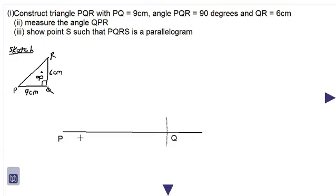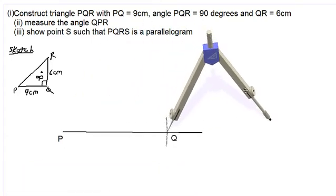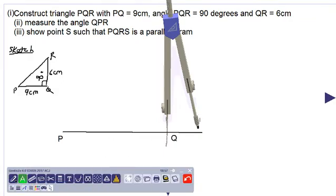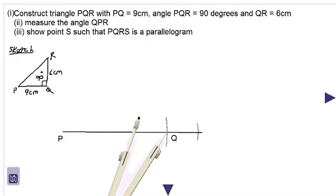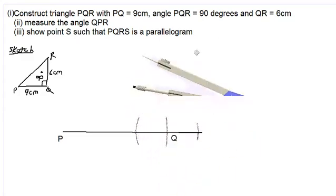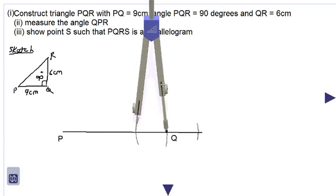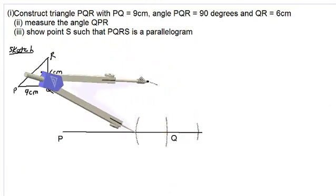Let us construct a 90 degree angle at point Q. We take our compass again, placing the point at point Q, and stretch out the arm of the compass until we can make arcs as shown. We use our lighter pencil and cut over here. We swing the compass around without changing the radius and make an intersection on the other side — these are our construction arcs with the lighter pencil. We then place the point of the compass at one of the new points of intersection and stretch the arm beyond point Q, using our lighter pencil to make a construction arc.